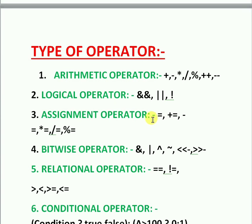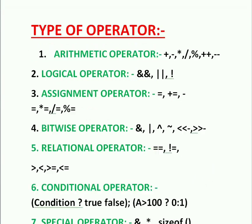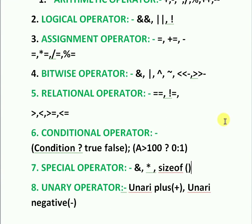Assignment operators are used to assign values to variables — specific for C programming. Bitwise operators are used to perform bit operations on given two variables. Relational operators are used to compare the values of two variables. Then there is the conditional operator.